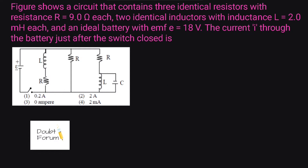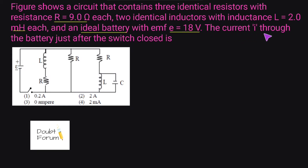Welcome to Doubt Forum. In this question, a figure is given showing a circuit that contains three identical resistors with resistance R = 9 ohm each, two identical inductors with inductance 2 millihenry each, and an ideal battery with EMF 18 volt. The ideal battery has no internal resistance. We are asked to find the current I through the battery just after the switch is closed.